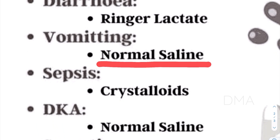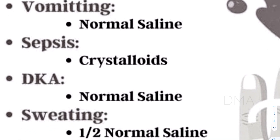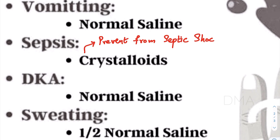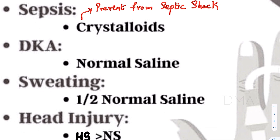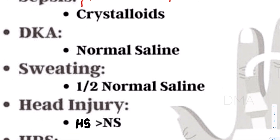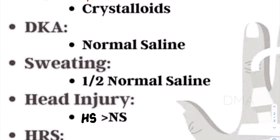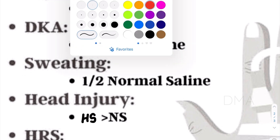In the case of sepsis, we give crystalloids. Crystalloids can actually prevent sepsis patients from getting into a septic shock condition, so crystalloids would be the fluid of choice for sepsis patients. Then there is DKA — diabetic ketoacidosis — for which we usually give normal saline.